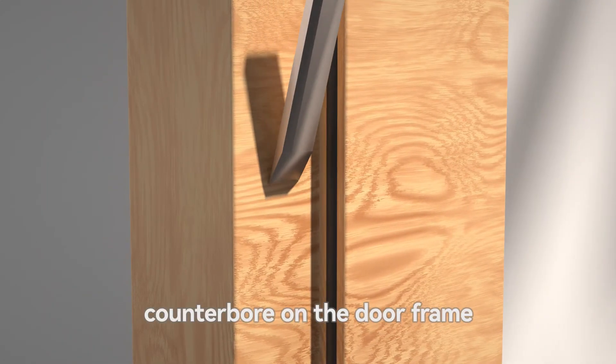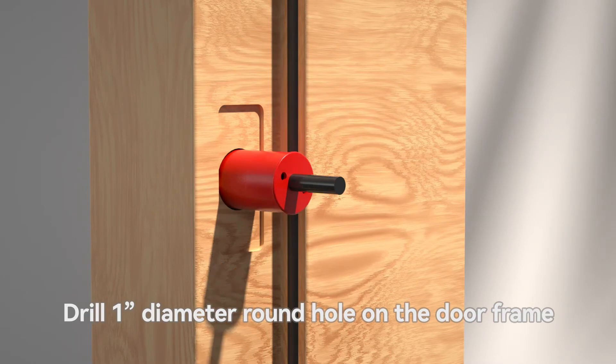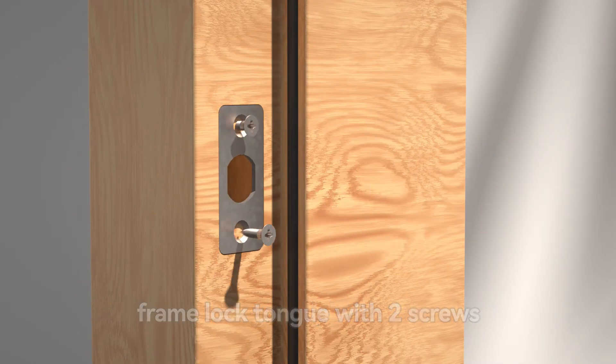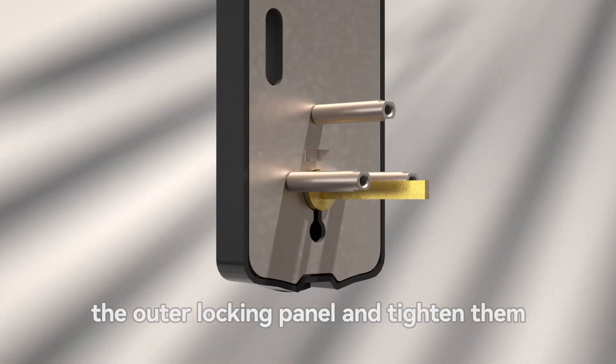Mill lock tongue guide plate counterbore on the door frame. Drill 1 diameter round hole on the door frame. Tighten the guide plate of the door frame lock tongue with two screws. Screw three screw sleeves into the outer locking panel and tighten them.